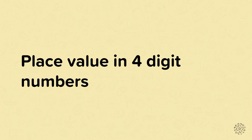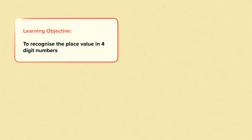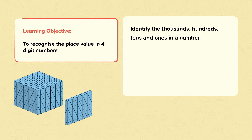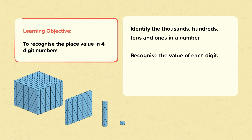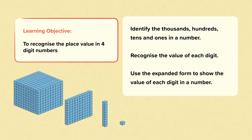Place value in four-digit numbers. In this nugget, the learning objective is to recognise the place value in four-digit numbers. First, we'll identify the thousands, hundreds, tens and ones in a number. And then we'll recognise the value of each digit and use the expanded form to show the value of each digit in that number.